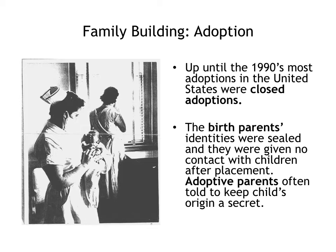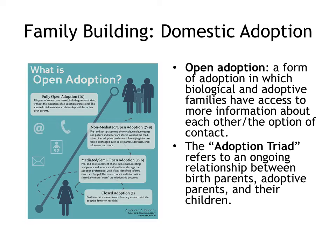For this reason, transracial adoptions — adoptions by parents of a different race from the child — were very unusual. Because records were sealed after birth to protect the identities of all involved, adopted children who found out the truth about their origins were often unable to ever find out who their biological parents were. And birth moms and dads were left to spend their lives wondering what had happened to their babies.